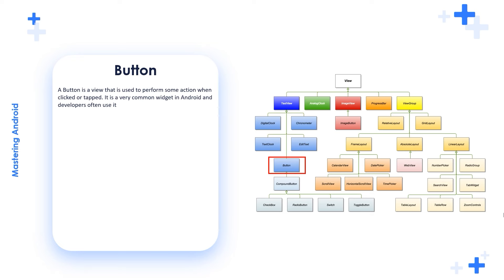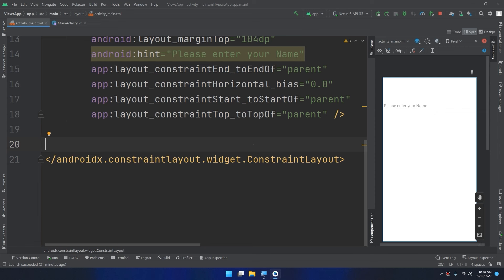I want you to concentrate with me in order to achieve the goal of this video, which is handling click events on the button — not just dealing with the attributes. So back to Android Studio, I will jump directly to the activity_main layout.